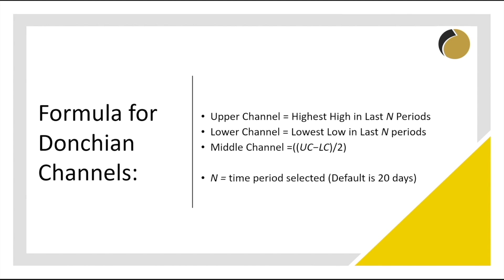Let's go through the formula for how we actually work out the Donchian Channel. The formula is relatively straightforward. There are three parts: upper, lower, and middle. To work out the upper part, we look at the highest high in the last number of periods. The lower Donchian is simply the lowest low in the last number of periods, and the middle channel is the upper channel minus the lower channel divided by two.